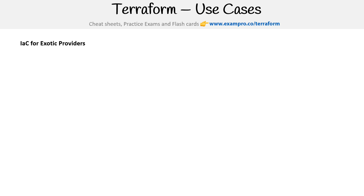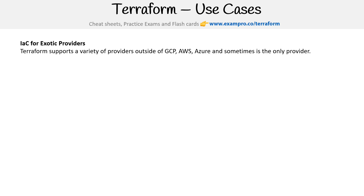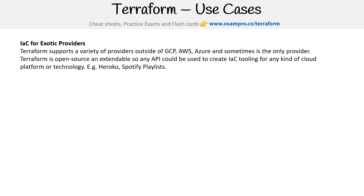The first use case is that Terraform has exotic providers. It supports a variety of providers outside of GCP, AWS, and Azure, and sometimes is the only provider. Terraform is open source and extendable, so any API could be used to create IaC tooling for any kind of cloud platform or technology. You can make your own provider — there are interesting ones like Heroku or even Spotify playlists.